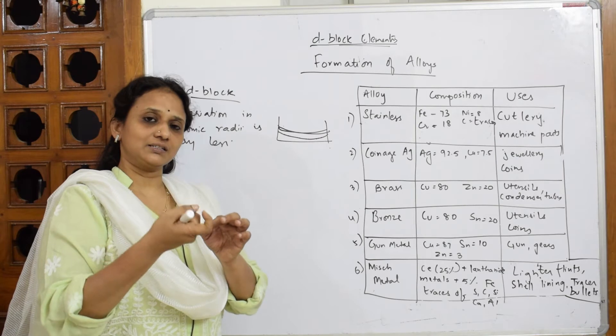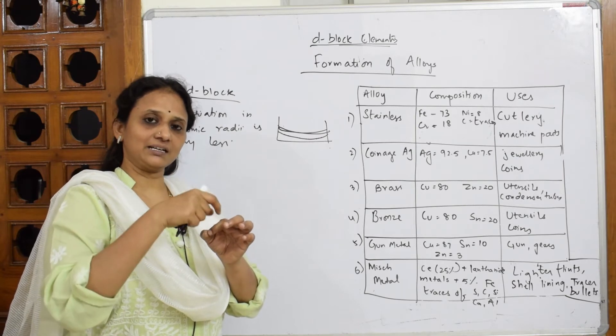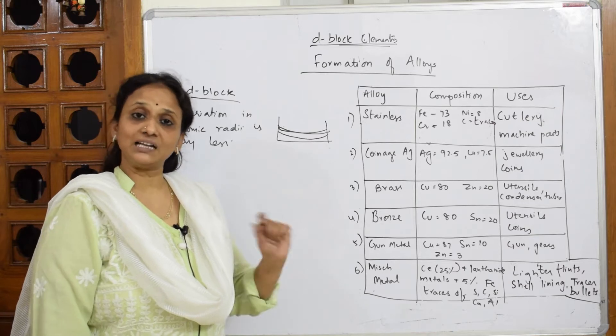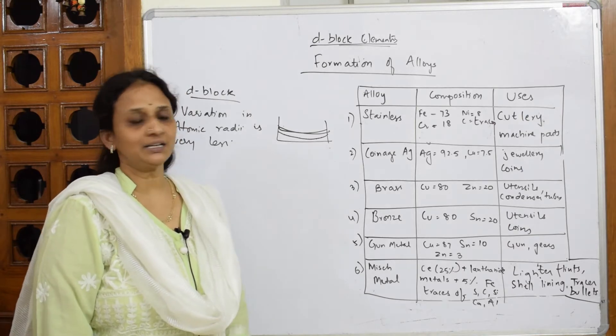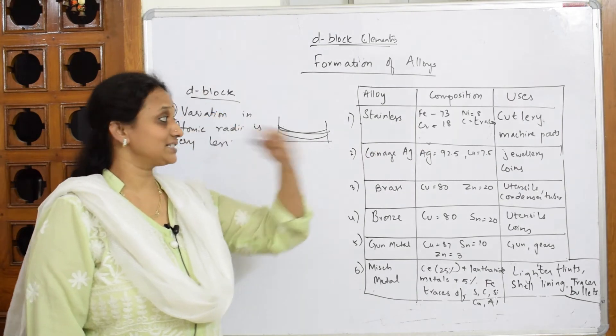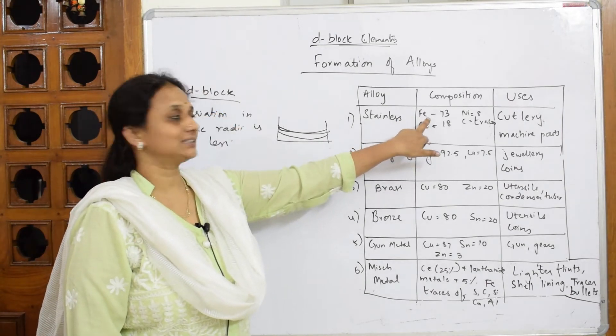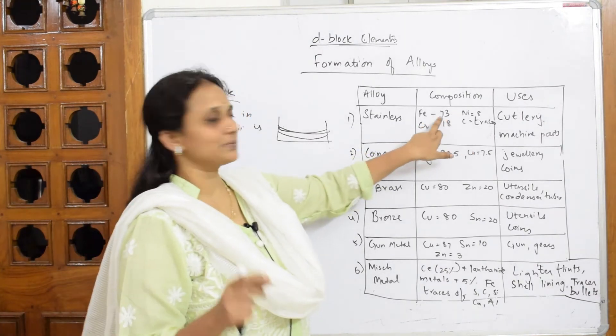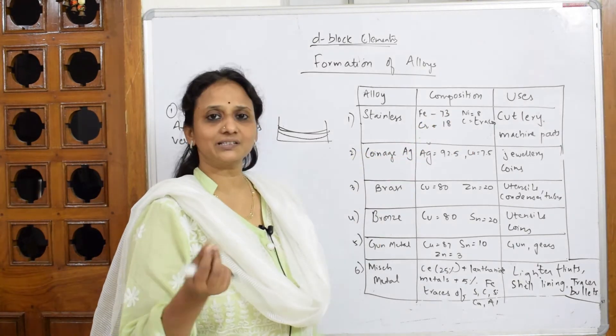You can combine one more type of metal atom into the lattice of that particular D-block element. Suppose I take a lattice, the lattice size or the radii easily fits other atoms also because the immediate elements are similar.